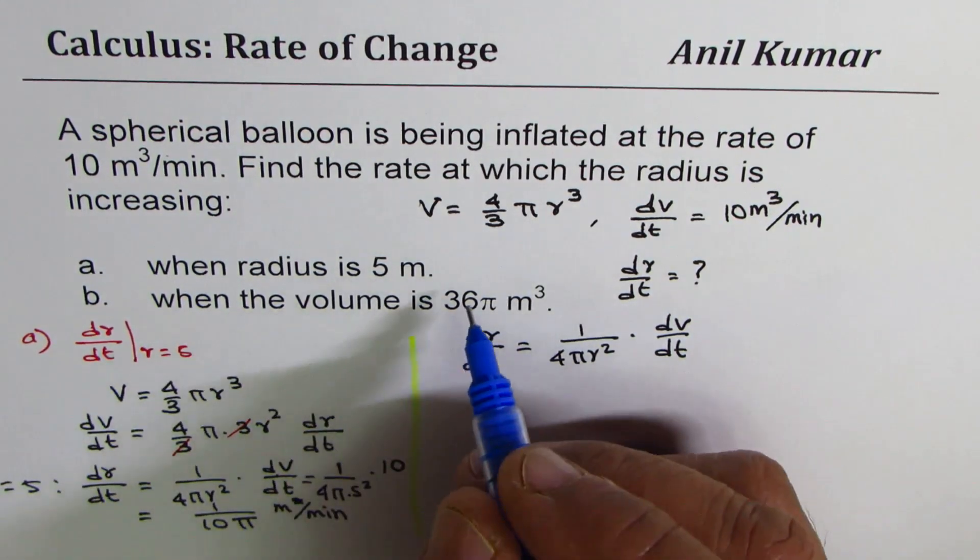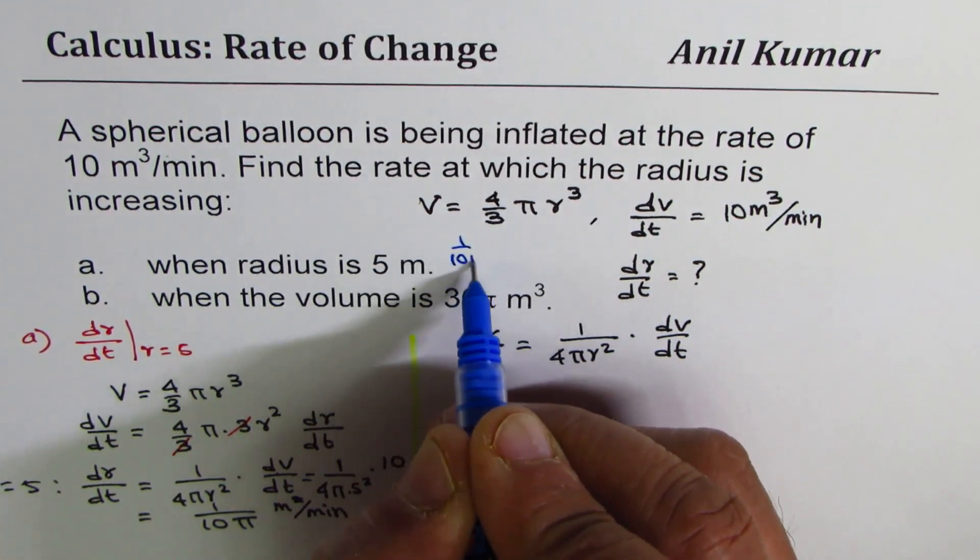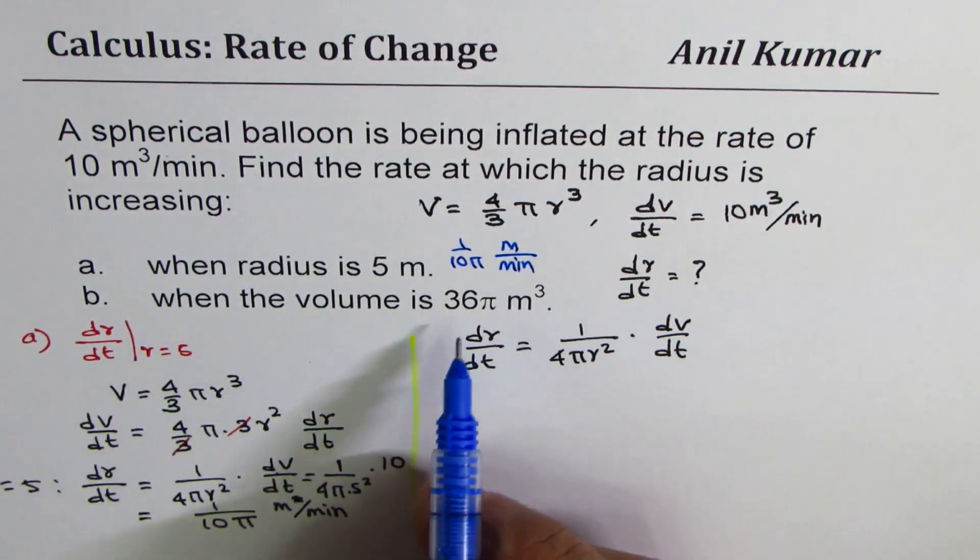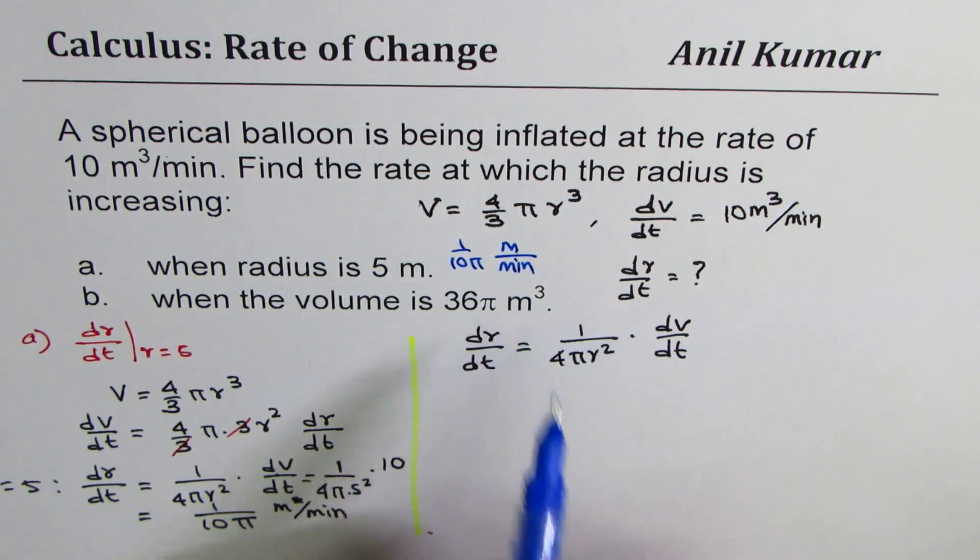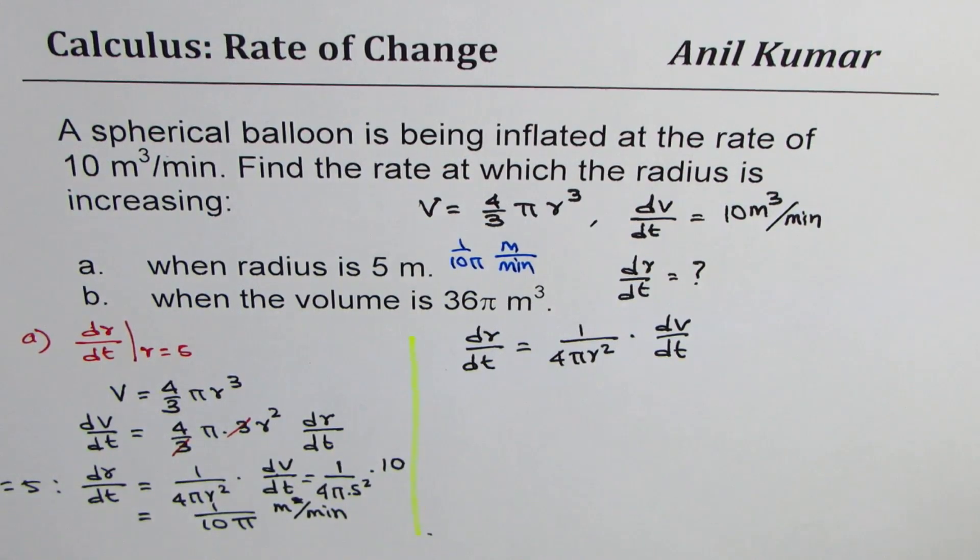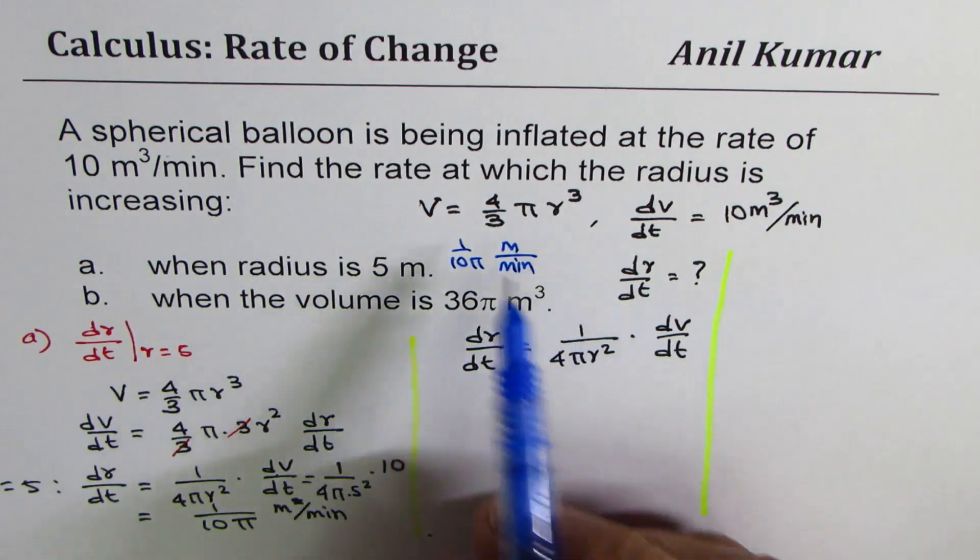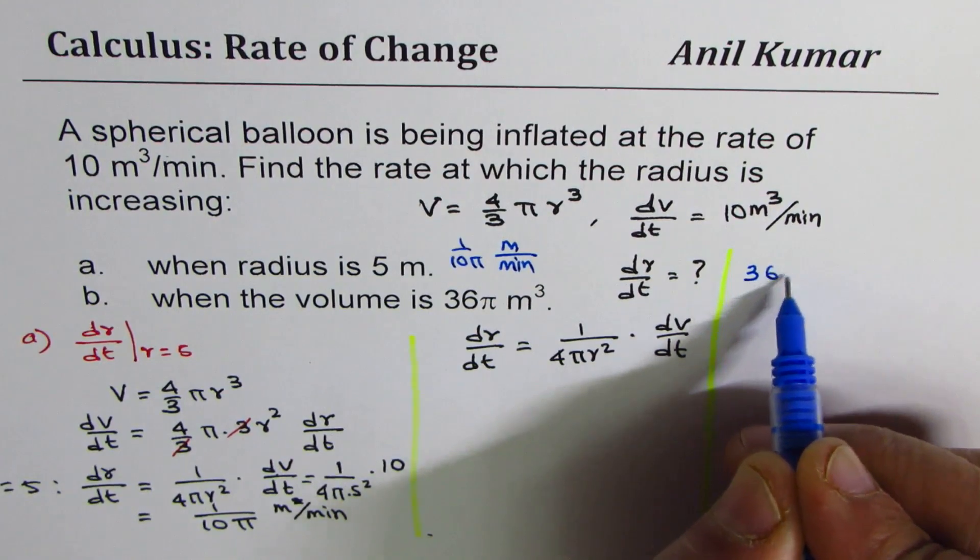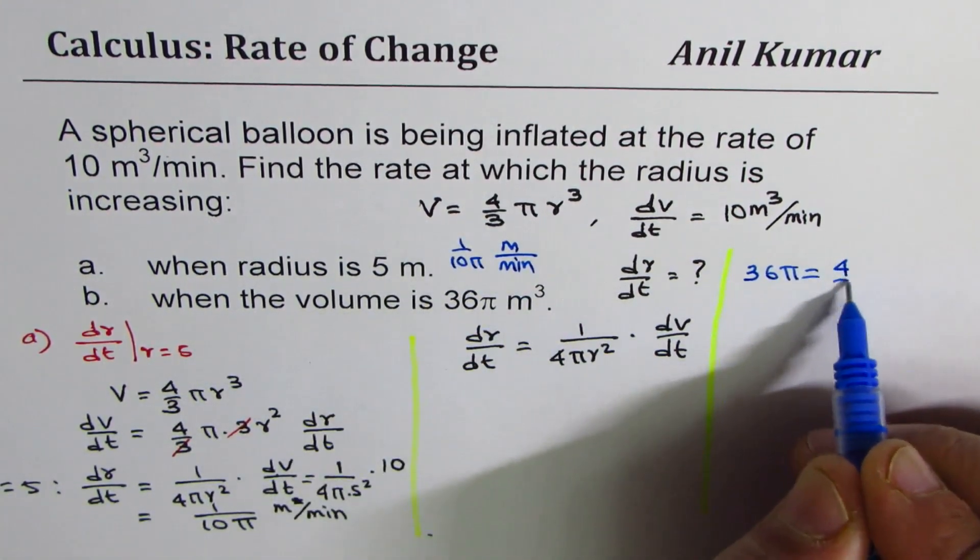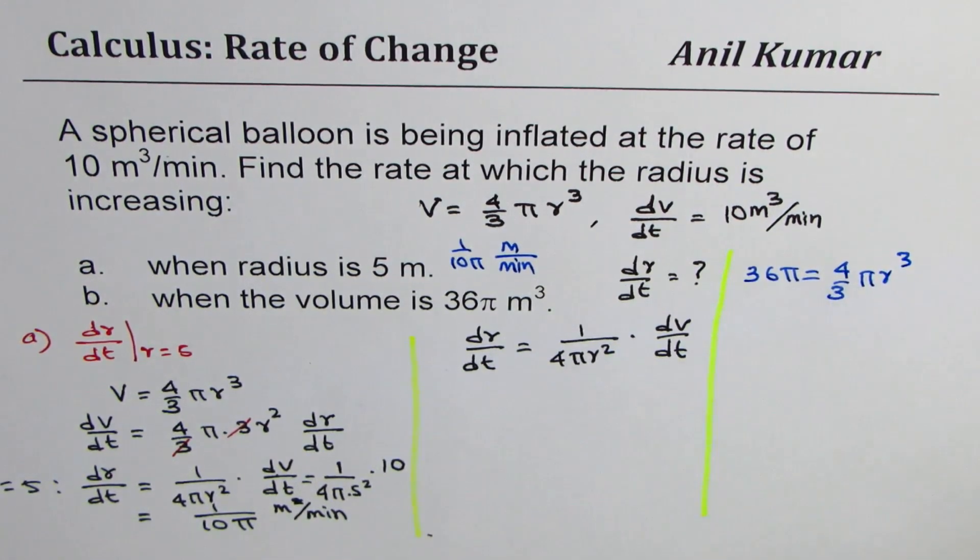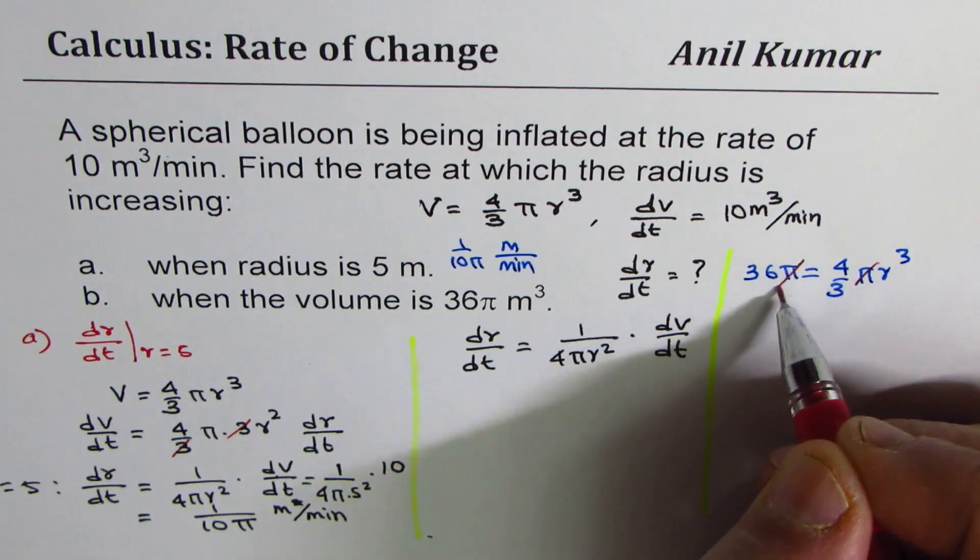So for the first one, the answer is 1 over 10 pi meters per minute. Now let's do the second part. When volume is 36 meter cube, now in this formula, we need what r is. So let's find what is r when volume is 36 meter cube. So the formula is volume is 4 by 3 pi r cube. So we can write this as 36 pi equals to 4 by 3 pi r cube. So now we can calculate what r is.